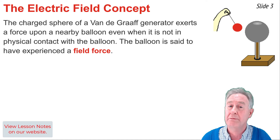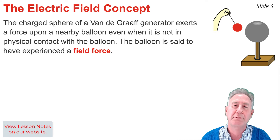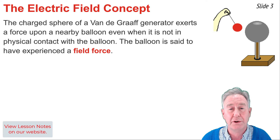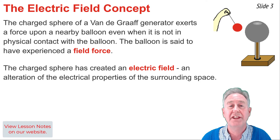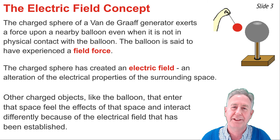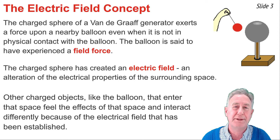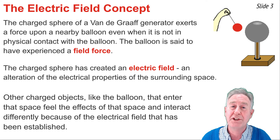Let's suppose that we have a charged Vandegraaff generator and we bring a balloon near the globe of that charged Vandegraaff generator. As the balloon is brought near but not touching, it begins to feel an interaction with the sphere. We might say the balloon experiences a field force — an action that occurs over a distance of separation. The sphere creates an electric field, an alteration of the electric properties of the space that surrounds it, and any object like the balloon brought into that space feels the effect of the field.